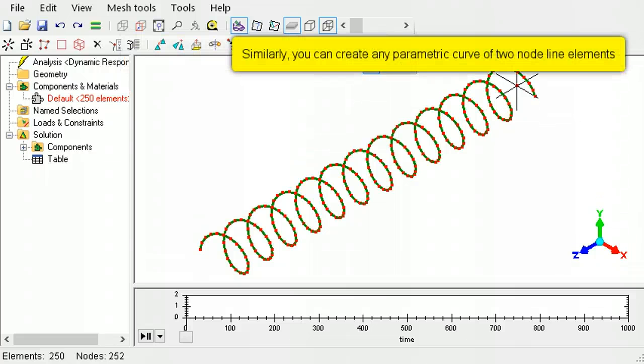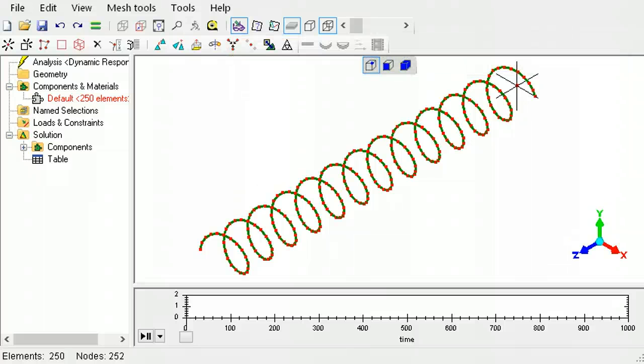Similarly, any kind of curve can be generated in terms of parameter p. This ends the tutorial on using the curve generator's parametric capability. Please view the other tutorials on creating meshes.